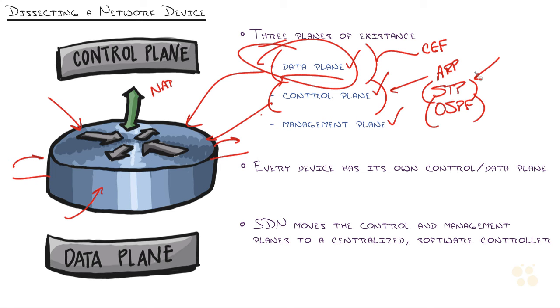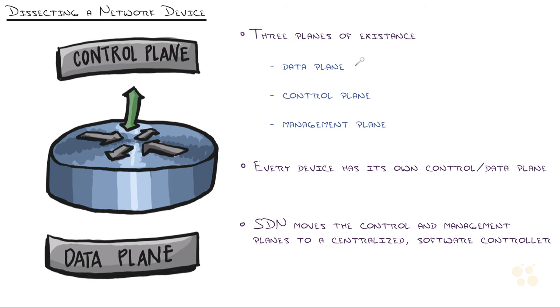That's actually known as a distributed control plane, where each device has a brain. They exchange information with other devices and then say, okay, based on the rules that you've given me, I will, for example, figure out the best way to reach the root bridge or add these routes to my routing table. Distributed control plane. You figure out where I'm going with this.